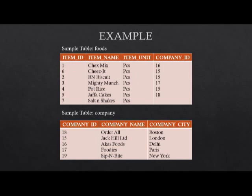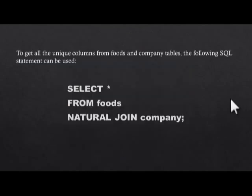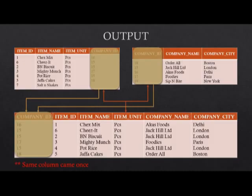Here is a small example. We have two tables: the first one named 'foods' and the second one named 'company.' Looking at them, you can see there is one common column name between the two tables — company_id — and they both have the same data type: integers. So we can proceed with the natural join. To get all unique columns from the foods and company tables, we use: SELECT * FROM foods NATURAL JOIN company; and this is the output — company_id is only shown once.